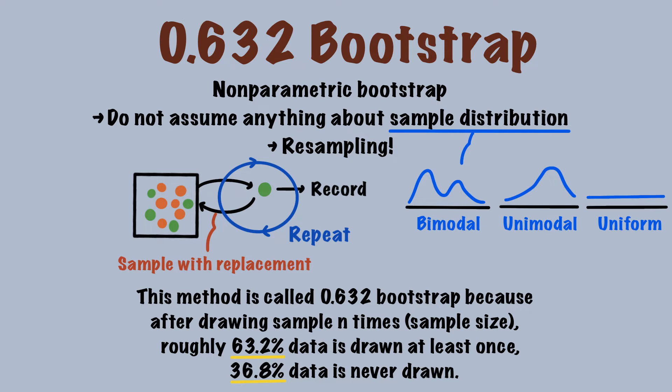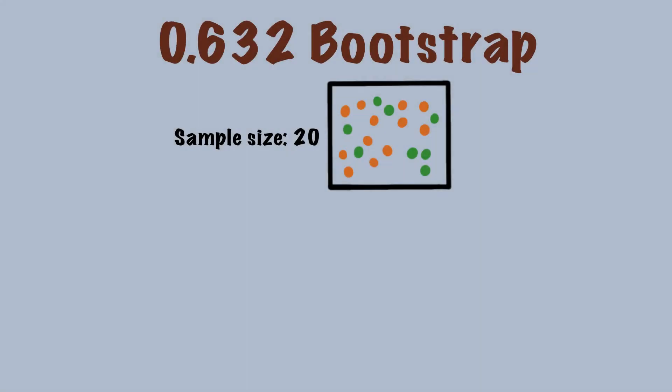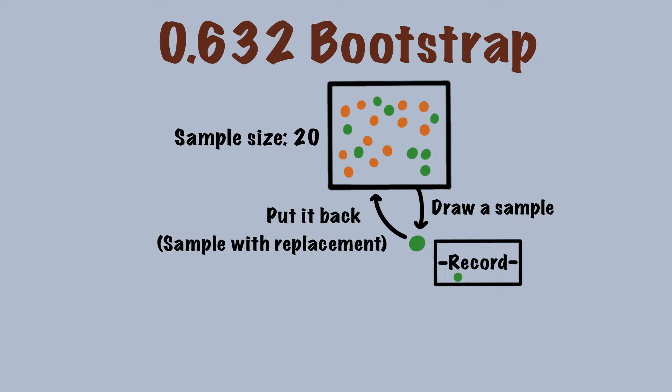Alright, now we can talk about the procedure. Suppose our database contains 20 samples, and the samples are either orange or green. We first draw a sample from the database, and in this case, the sample is green. Then we record the sample we drew, so you can see a green point in the record. Afterwards, we put this sample back to the database, so the size of the database is never changed.